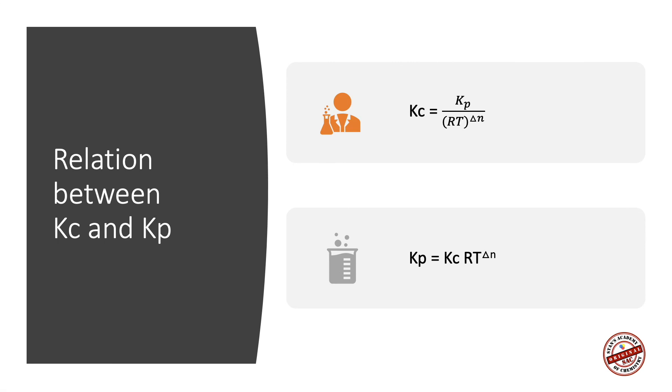There is also a relationship between Kc and Kp. They are represented in the two equations given on the right. Kc equals Kp divided by RT raised to delta N, or Kp equals Kc times RT raised to delta N, which means we can convert Kc to Kp or Kp to Kc provided you know the balanced equation, the value of R, and the temperature in Kelvin.